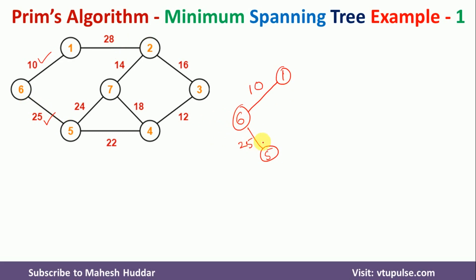Now we consider the neighbors of all three visited nodes. Both neighbors of node 6 have already been considered. The neighbor of node 1 is node 2 again with weight 28. The neighbors of node 5 are node 4 and node 7, and node 4 has the smaller weight. So we draw an edge from node 5 to node 4 with weight 22.